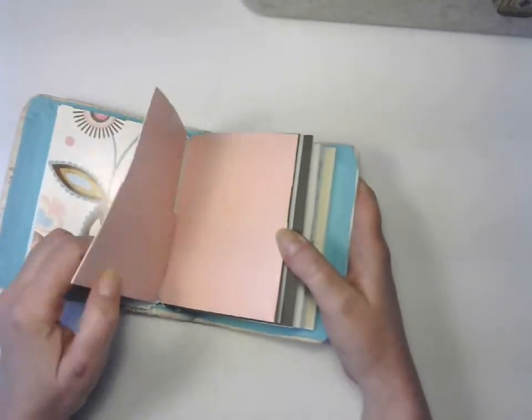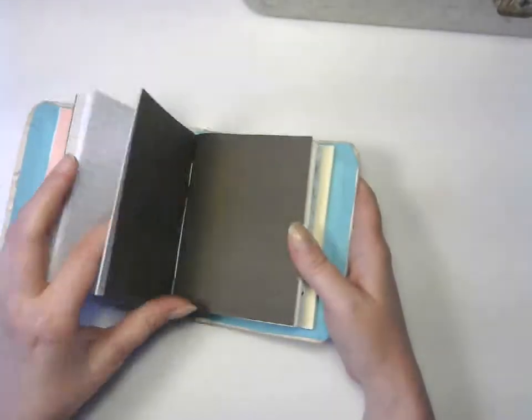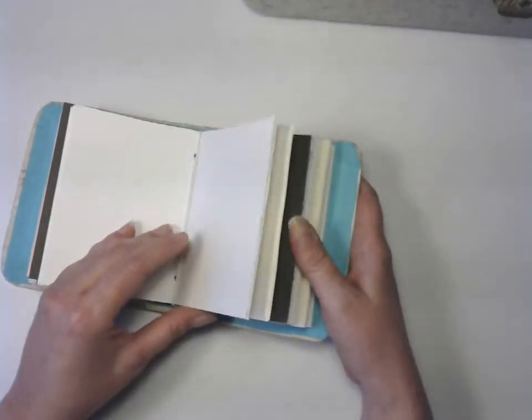This will be a credit card and money wallet, and this is a gardening journal, and this is a 140 pound watercolor.